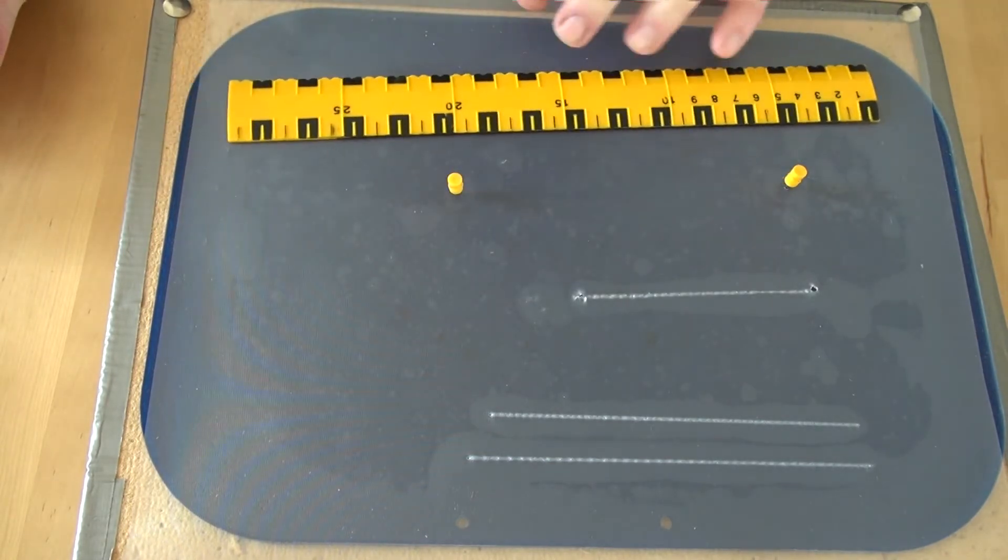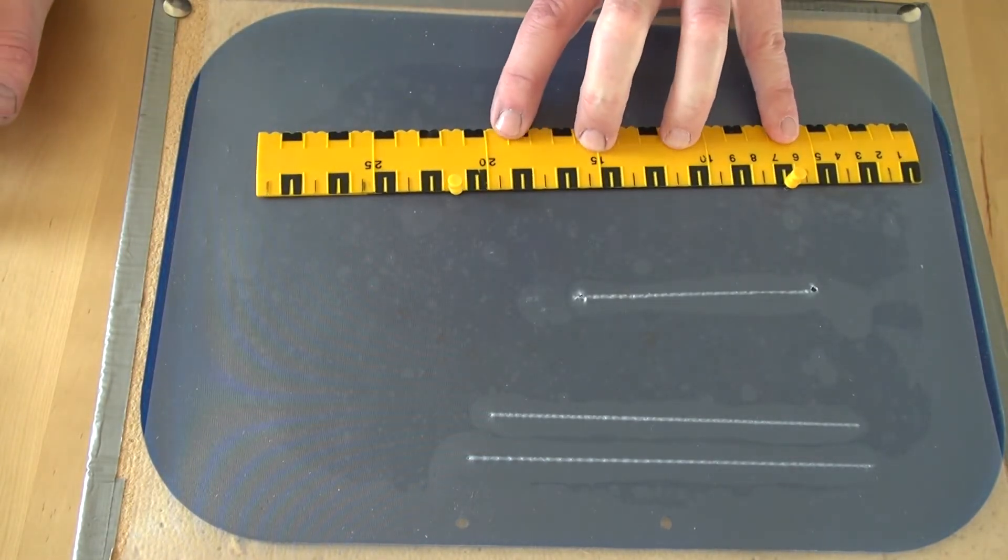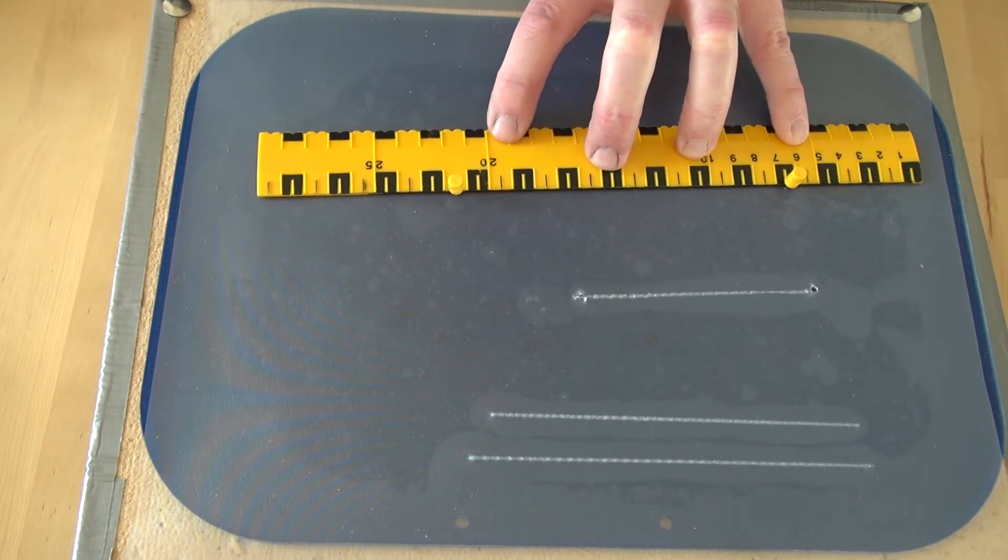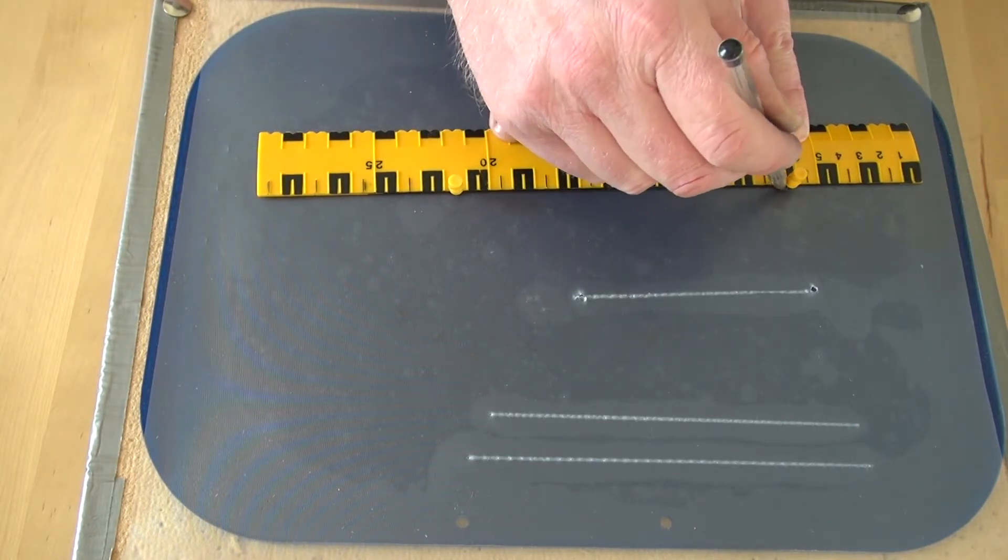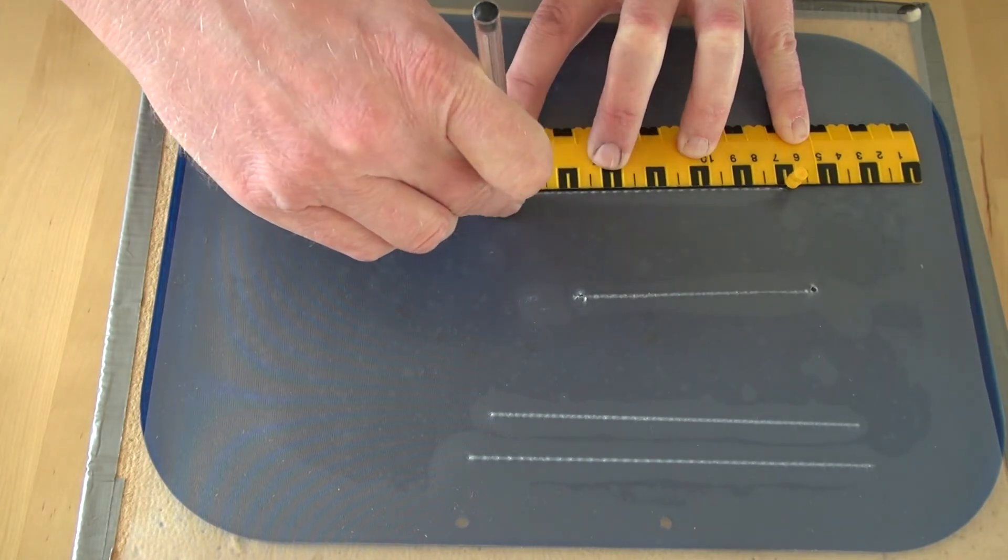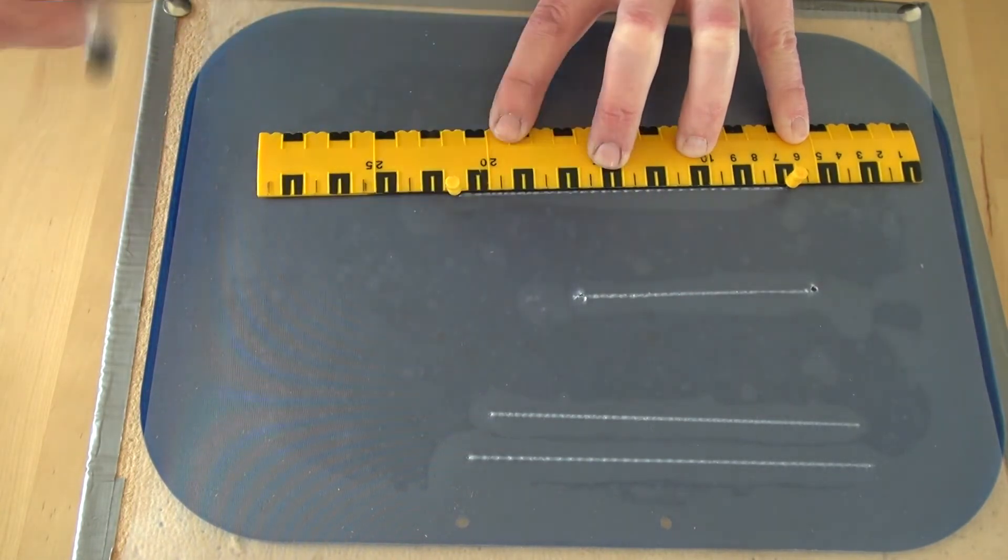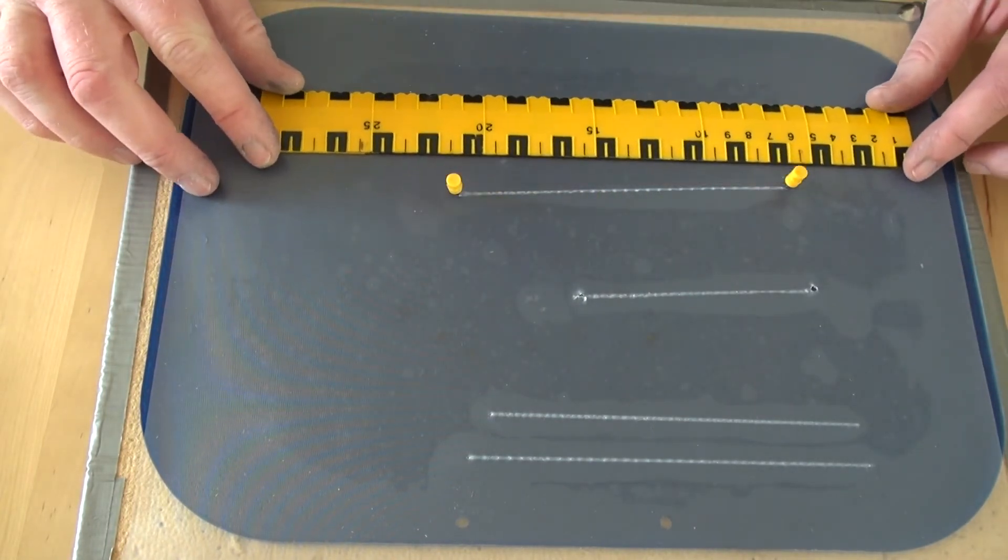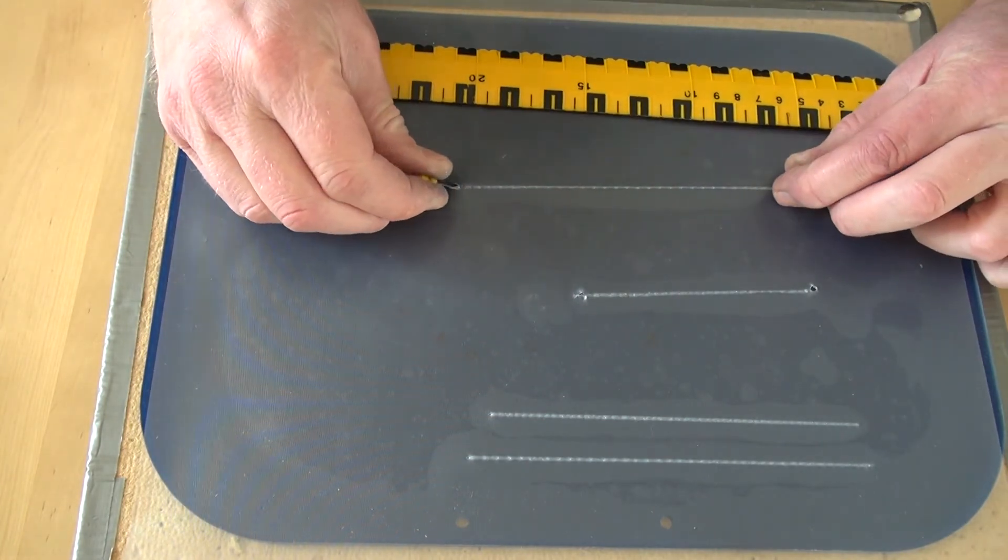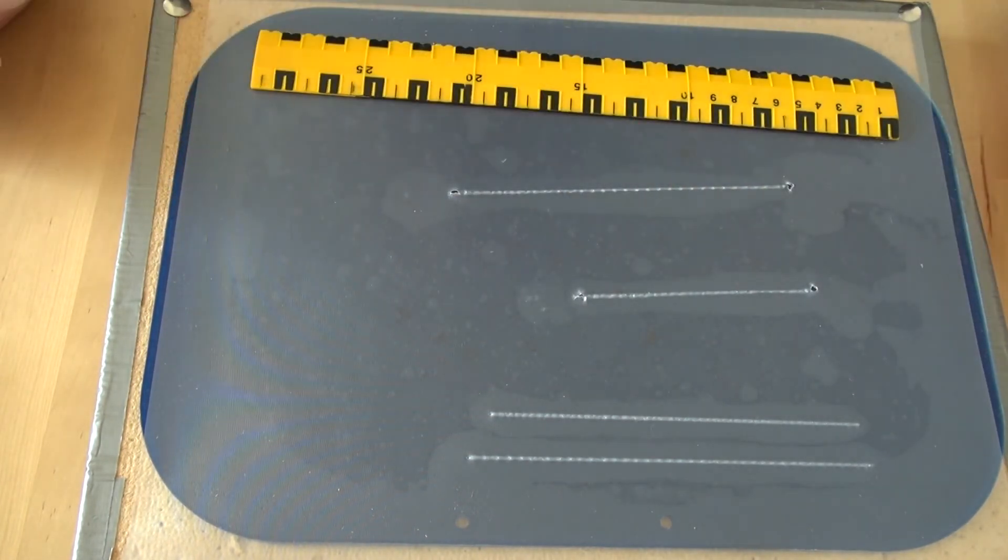Move the ruler away. Jam it up against the two pins. Press down, spider legs, and draw. There you have it. That's how you draw lines with precise lengths.